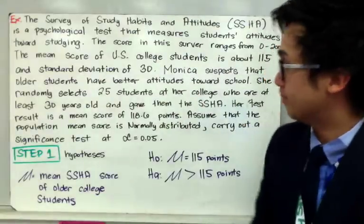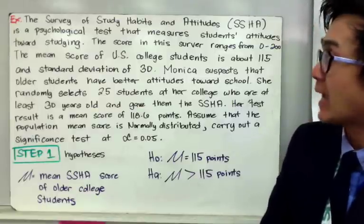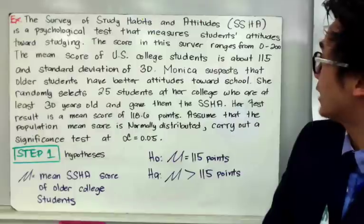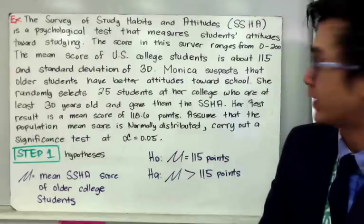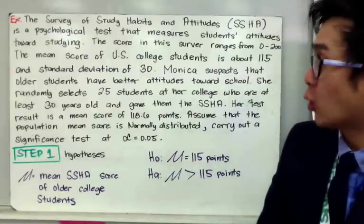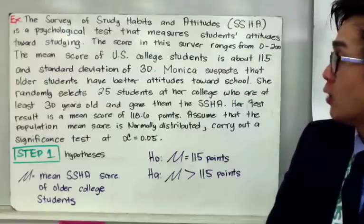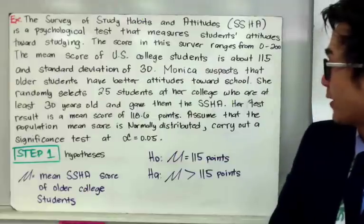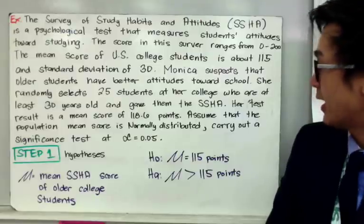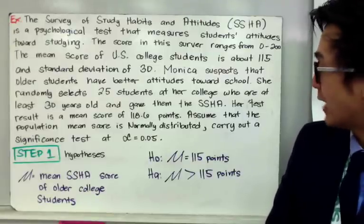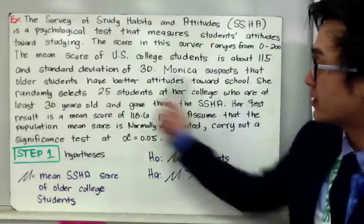Here is our first example. The Survey of Study Habits and Attitudes (SSHA) is a psychological test that measures students' attitudes towards studying. Scores range from 0 to 200, and the mean score for US college students is about 115 with a standard deviation of 30. Monica suspects that older students have better attitudes towards school, so she randomly selects 25 students at her college who are at least 30 years old and gives them the same survey. Her test result gave a mean score of 118.6 points. Assuming the population mean score is normally distributed, carry out a significance test at alpha of 0.05.